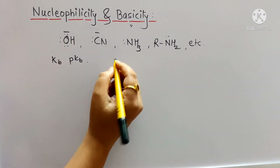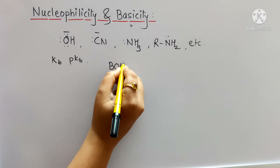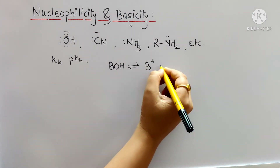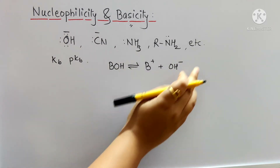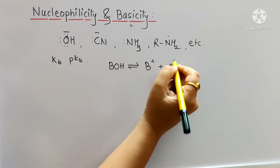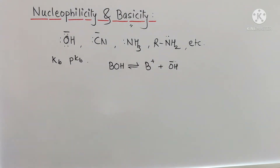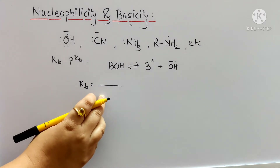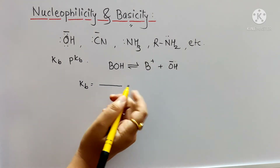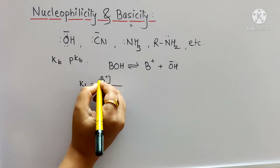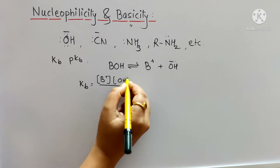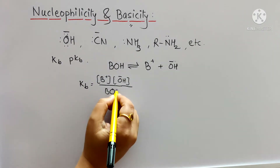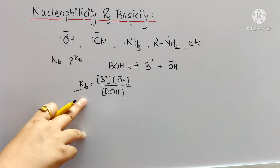We will write the general reaction for these bases first. Consider any base as BOH — the dissociation of this base can be written as B⁺ and OH⁻ ion. The KB for this reaction can be written as: KB equals the concentration of B⁺ multiplied by the concentration of OH⁻ divided by the concentration of the reactant. By this formula we can calculate KB.